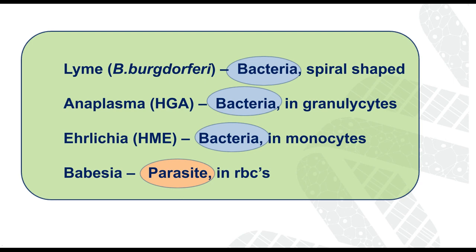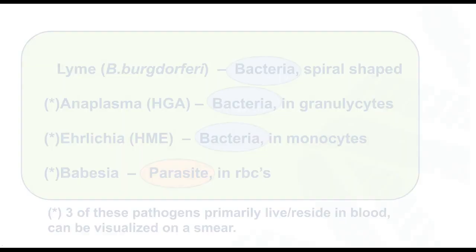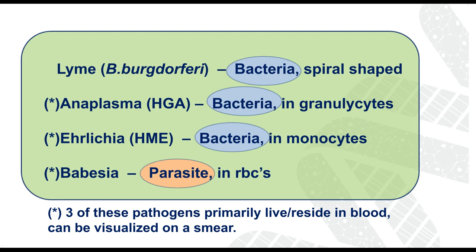Another way to ask which disease doesn't fit: the top three on the slide are all bacteria, while Babesia is not a bacteria — it is a parasite. The germ that causes Lyme is Borrelia burgdorferi, a spiral-shaped spirochetal bacteria. Anaplasma and Ehrlichia are bacteria closer to the rickettsia family. The asterisk next to the three bottom pathogens is important because those pathogens live in blood cells — granulocytes, monocytes, and erythrocytes (red blood cells).